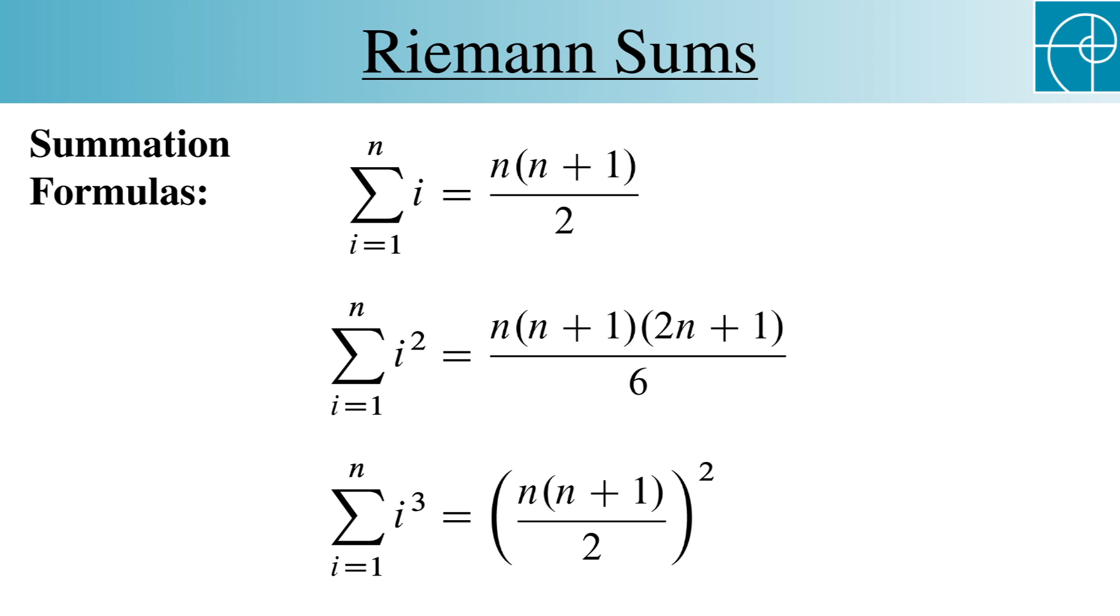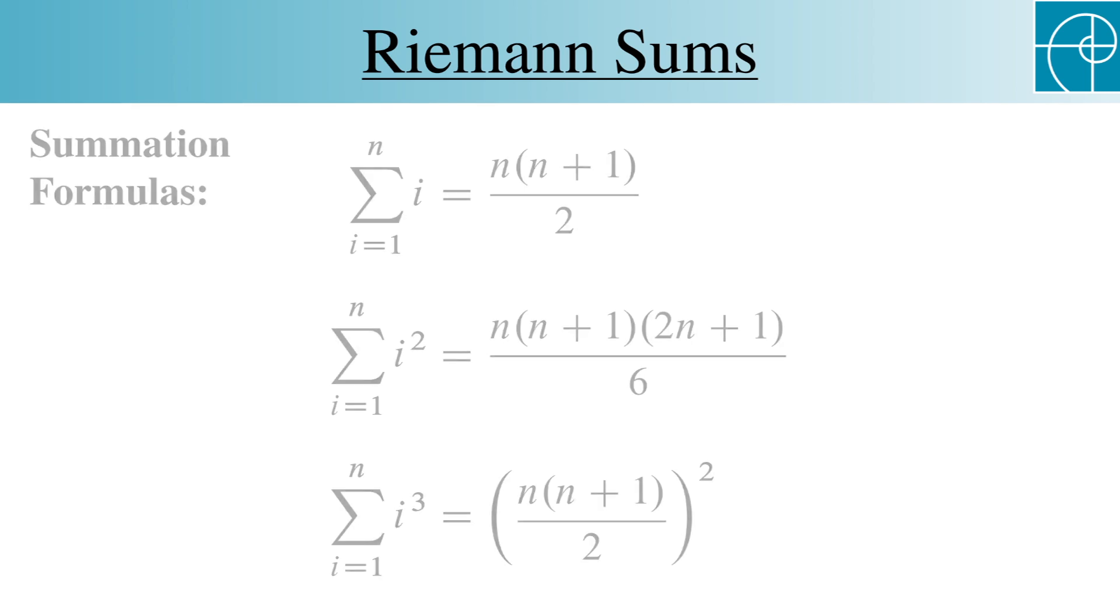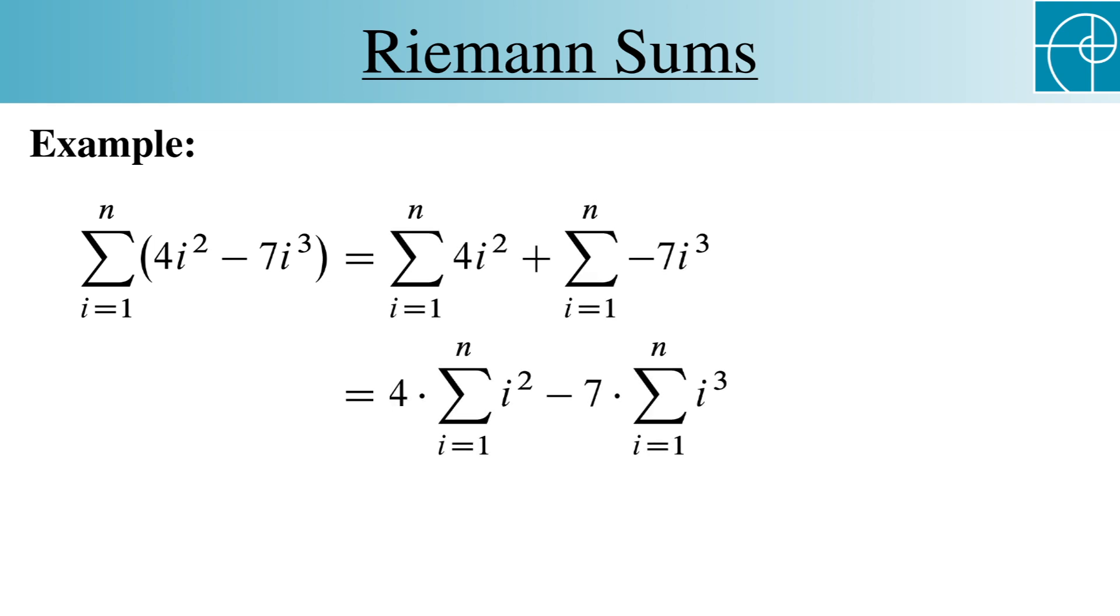So let's look at a quick example of the application of these properties and formulas. Let's simplify the sum from i equals 1 to n of 4i squared minus 7i cubed. Using the two properties of sums, we can write this as two separate sums, and then pull out the 4 and negative 7. Finally, we can write this without sigmas by using the formulas for the sums of squares and cubes.